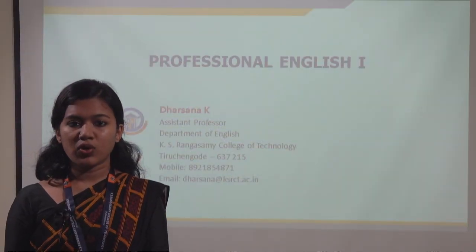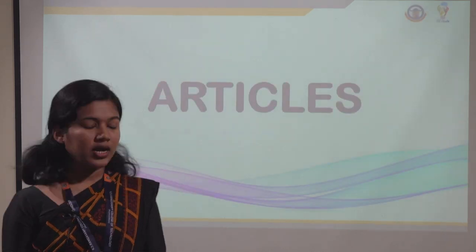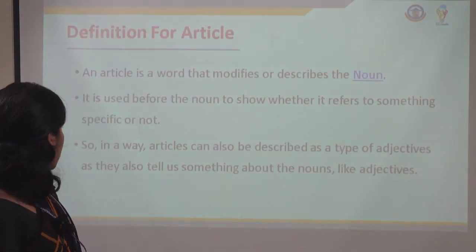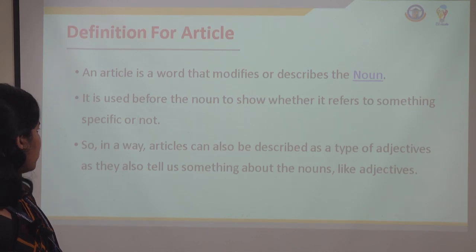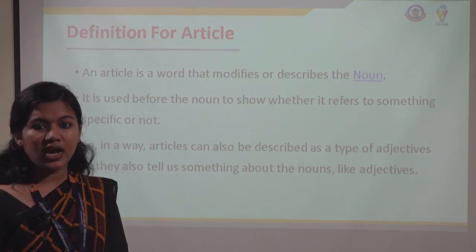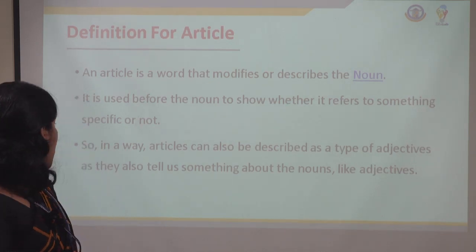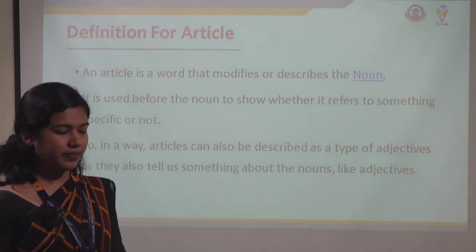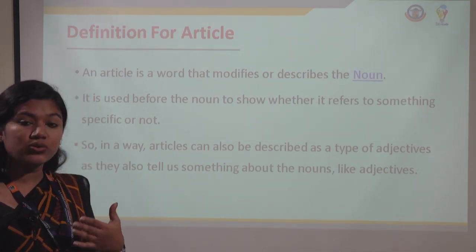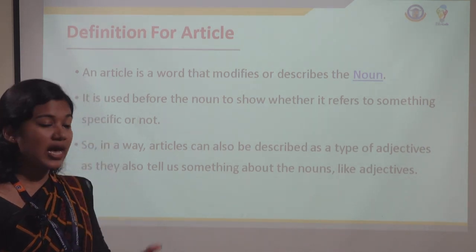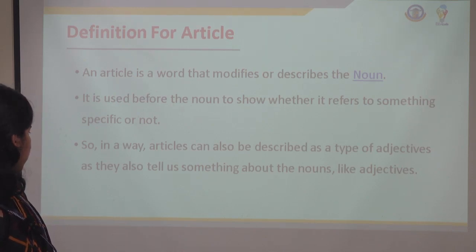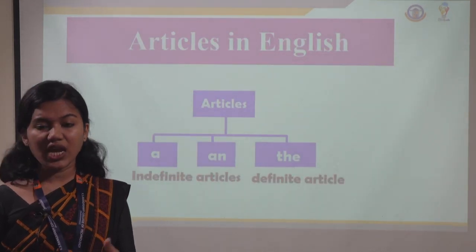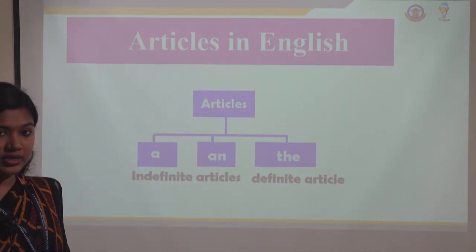Today we are going to have a look at what articles are. An article is a word that modifies or describes a noun. It is used before the noun to show whether it refers to something specific or not. In a way, an article can also be described as an adjective because it talks more about the noun — it helps us to know what a noun is.